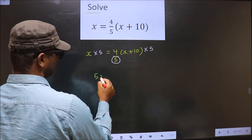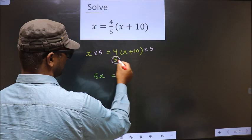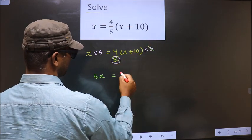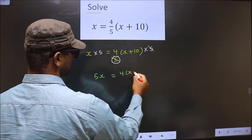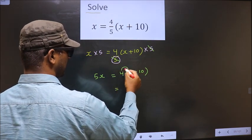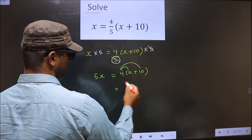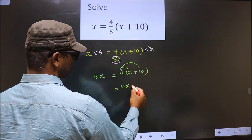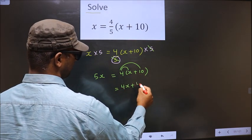So here we get 5x = here this cancels out, you are left with 4(x + 10). Now here you should open up the bracket in this way: 4 into x is 4x, plus 4 into 10 is 40.